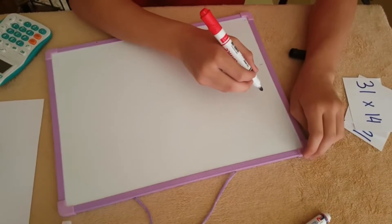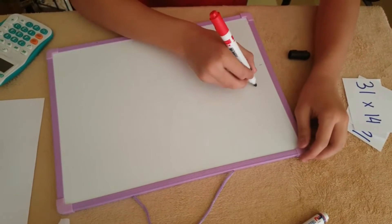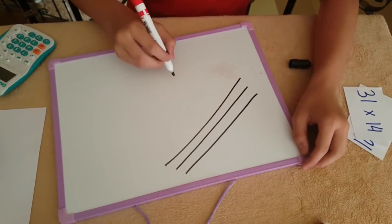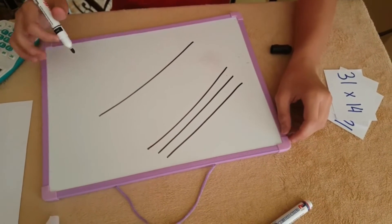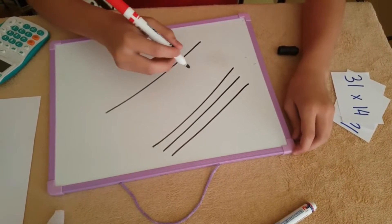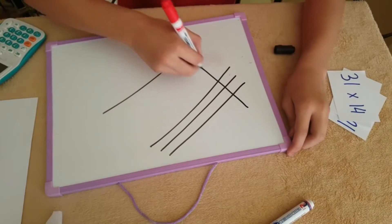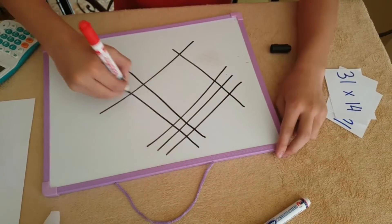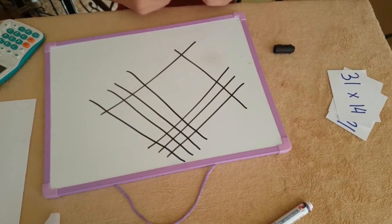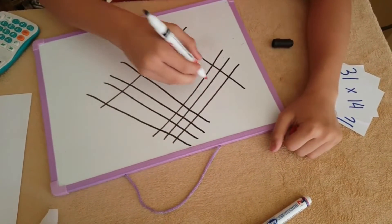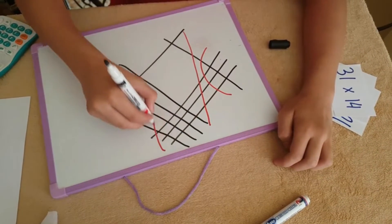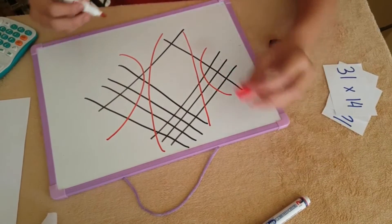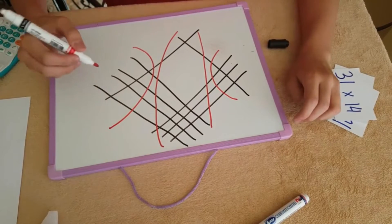The next number we're going to multiply is 31 times 14. So again, we write three diagonal lines for the first digit, give a little space and write the lines for the second digit. The multiplier of 31 is 14, so we write one line for the first digit of 14, give a little space and write the lines for the second digit of 14. Now we separate those into three zones again: the left zone, the center zone, and the right zone. Starting from the right again, we will count how many times the lines have intersected each other.